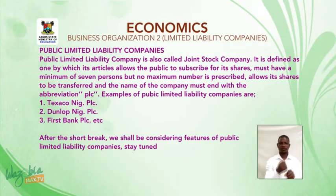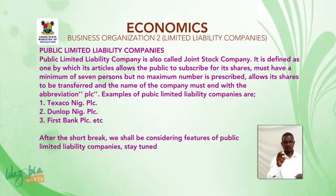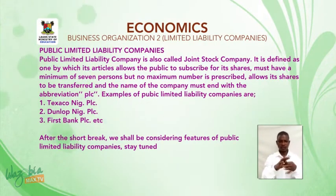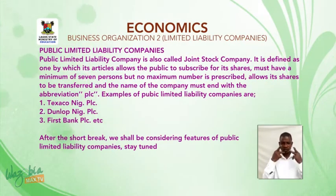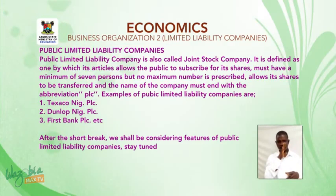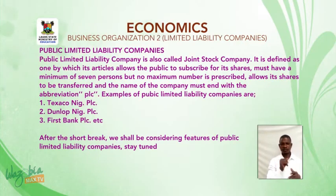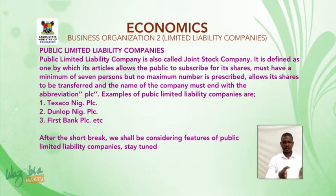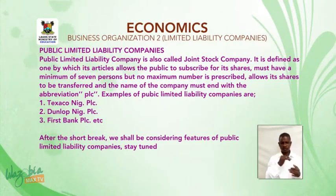What is a public limited liability company? A public limited liability company is also called a joint stock company. It is defined as one by which its articles allow the public to subscribe for its shares. It must have a minimum of seven persons, but no maximum number is prescribed. It allows its shares to be transferred, and the name of the company must end with the abbreviation 'PLC'. Examples include: Tezako Nigeria PLC, Donop Nigeria PLC, and First Bank PLC, among others.